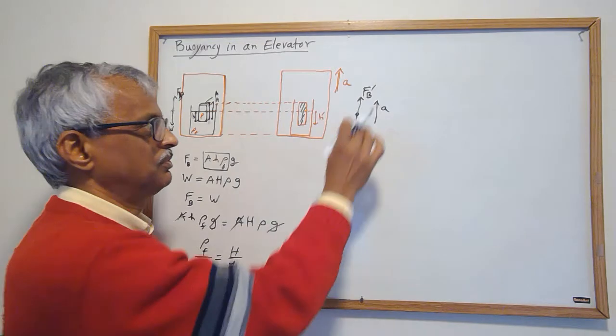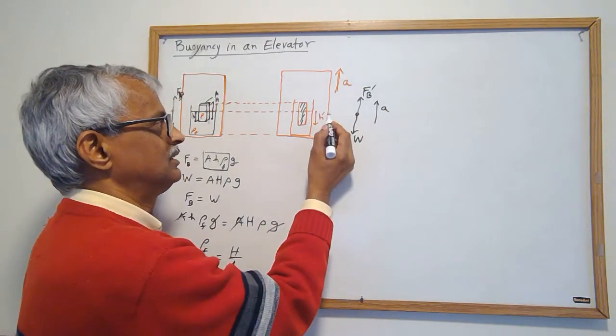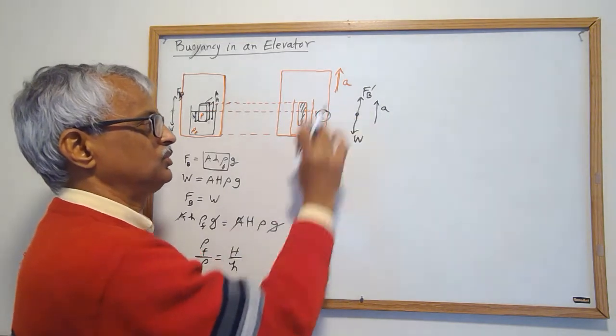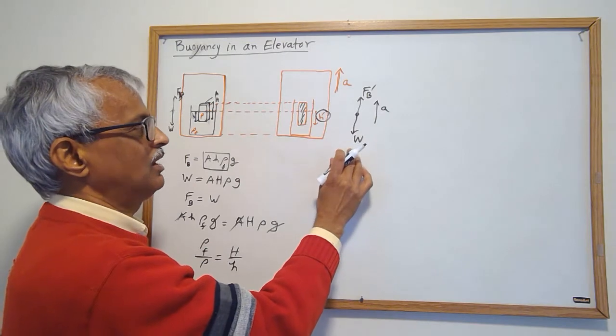And I want to figure out is the new buoyancy the old buoyancy or new buoyancy? I don't know, it depends on how much height. So if I figure the new buoyancy I should be able to get h prime.